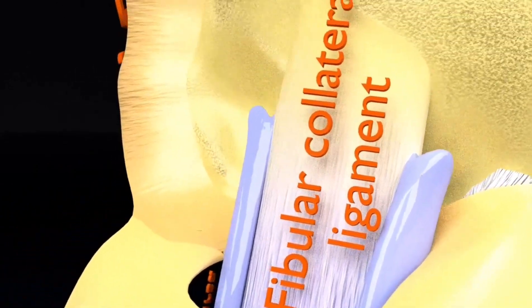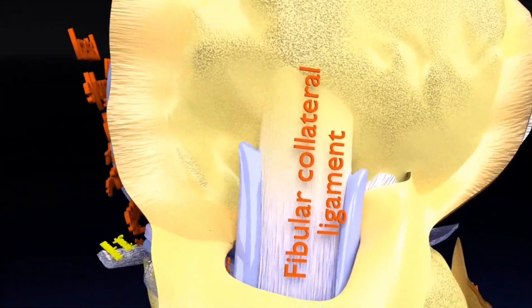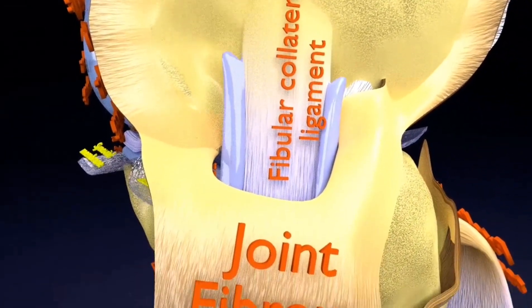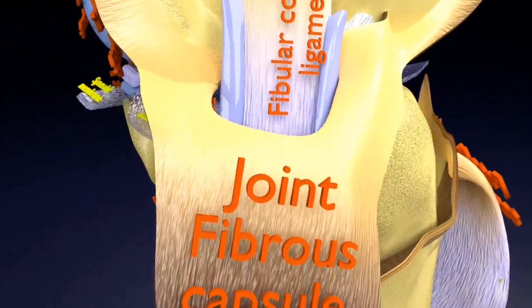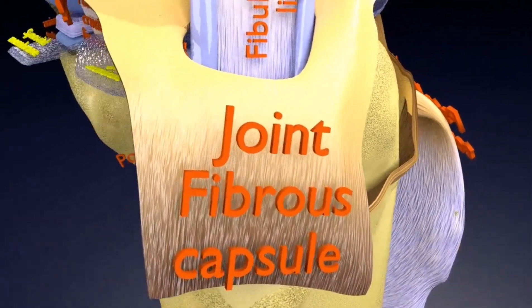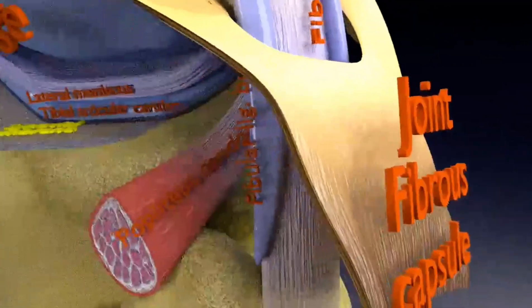The joint surfaces are lined with hyaline cartilage. There are two types of joint cartilage in the knee: fibrous cartilage and hyaline cartilage.